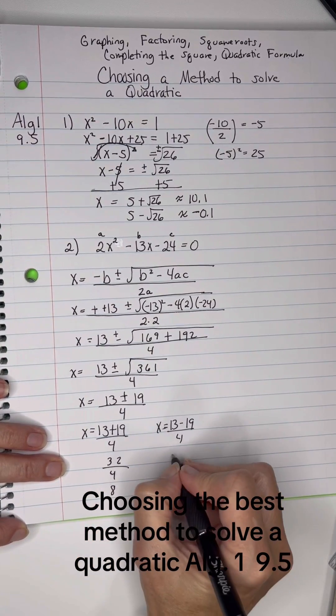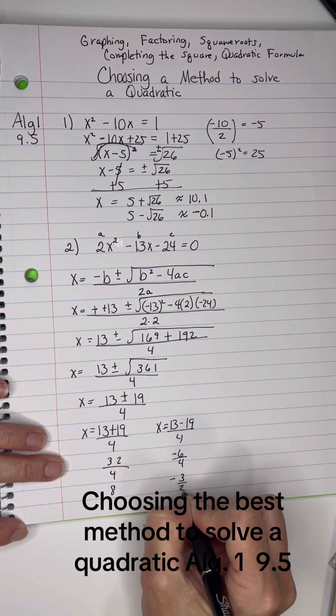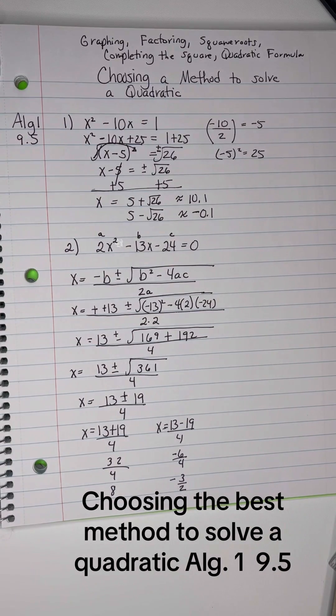And this one is negative 6 divided by 4, which is negative 3 over 2 for my two solutions.